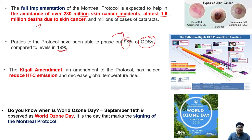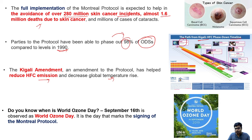The Kigali Amendment to the Montreal Protocol helps in the reduction of hydrofluorocarbon (HFC) emissions and aims to decrease global temperature, thereby addressing climate change problems. The Kigali agreement sets a hydrofluorocarbon phase-down timeline, with the goal of being achieved by 2047.